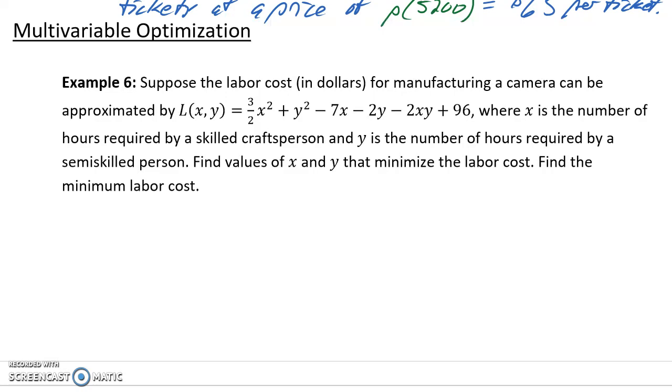We can also look at optimizing multivariable functions. While our process for doing this manually was quite a bit different than our process for optimizing single variable functions, the approach we use in Wolfram Alpha will be quite similar. In example 6, we're given a function that tells us the total labor cost for manufacturing a camera.